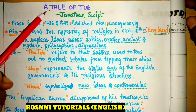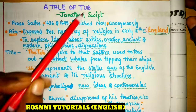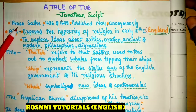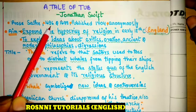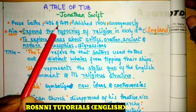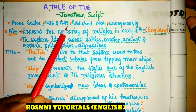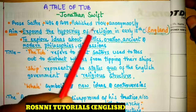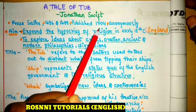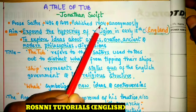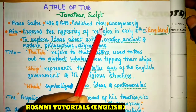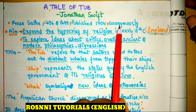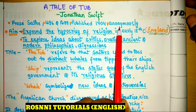Hello friends, today we are going to learn A Tale of a Tub by Jonathan Swift. It is a prose satire, it is a mockery. This work was started in the year 1696, concluded in 1699, and finally published in 1704. It was published without any name — it was published anonymously.